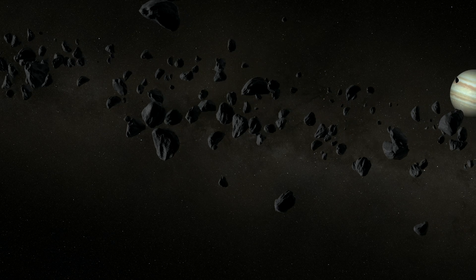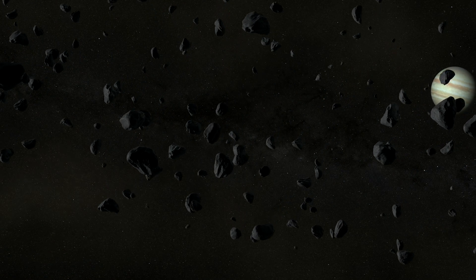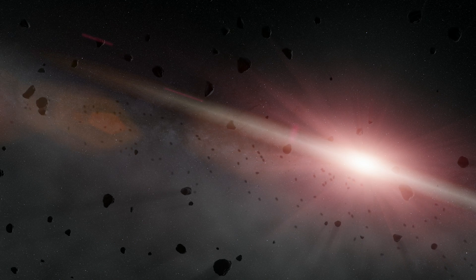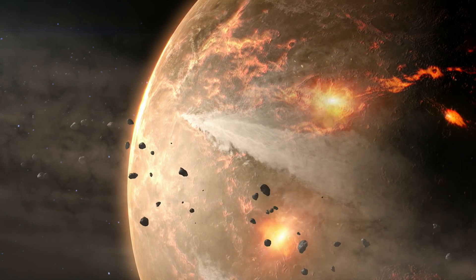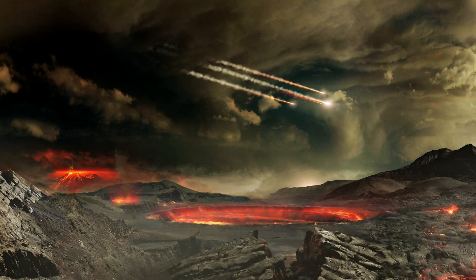In fact, worlds formed in this frozen hinterland may play an important role in making habitable planets closer to their star. The gravity of planets beyond the snow line can help send water-rich asteroids inward, where they can deliver water to young, rocky worlds.